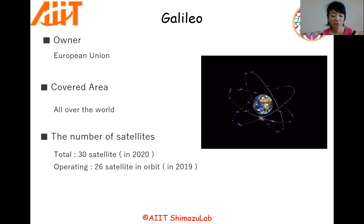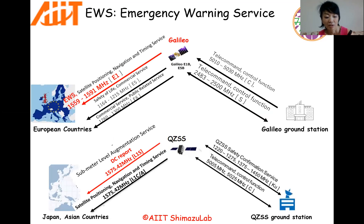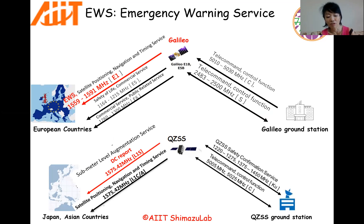Actually, the European Union has their GNSS system. We want to use L1S for broadcasting emergency information to evacuate from disasters in the same message format. One of the biggest points is both GNSS systems use the same communication band for broadcasting emergency information. They call it Emergency Warning Service, EWS, and we call it Disaster Crisis Report, DC report.